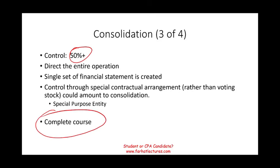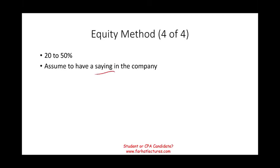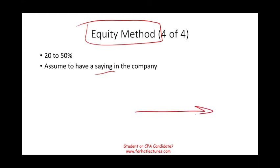The equity method is used when you own between 20 and 50% — more than fair value threshold, but less than control. Here you're assumed to have significant influence, a saying in the company. In the next recording, I'll devote one or two full lectures to the equity method from A to Z: from purchasing, to disposing, to impairment, to changing from the equity method to control, and from fair value to equity.